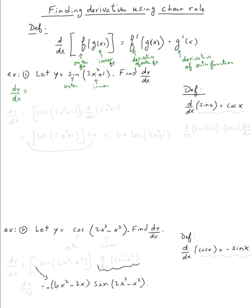So, according to the definition, it's going to be the derivative of the outer — let me move here — the derivative of sine. The definition is right here: derivative of sine is cosine, so it's cosine of the inner function g of x, which is three x squared plus one.